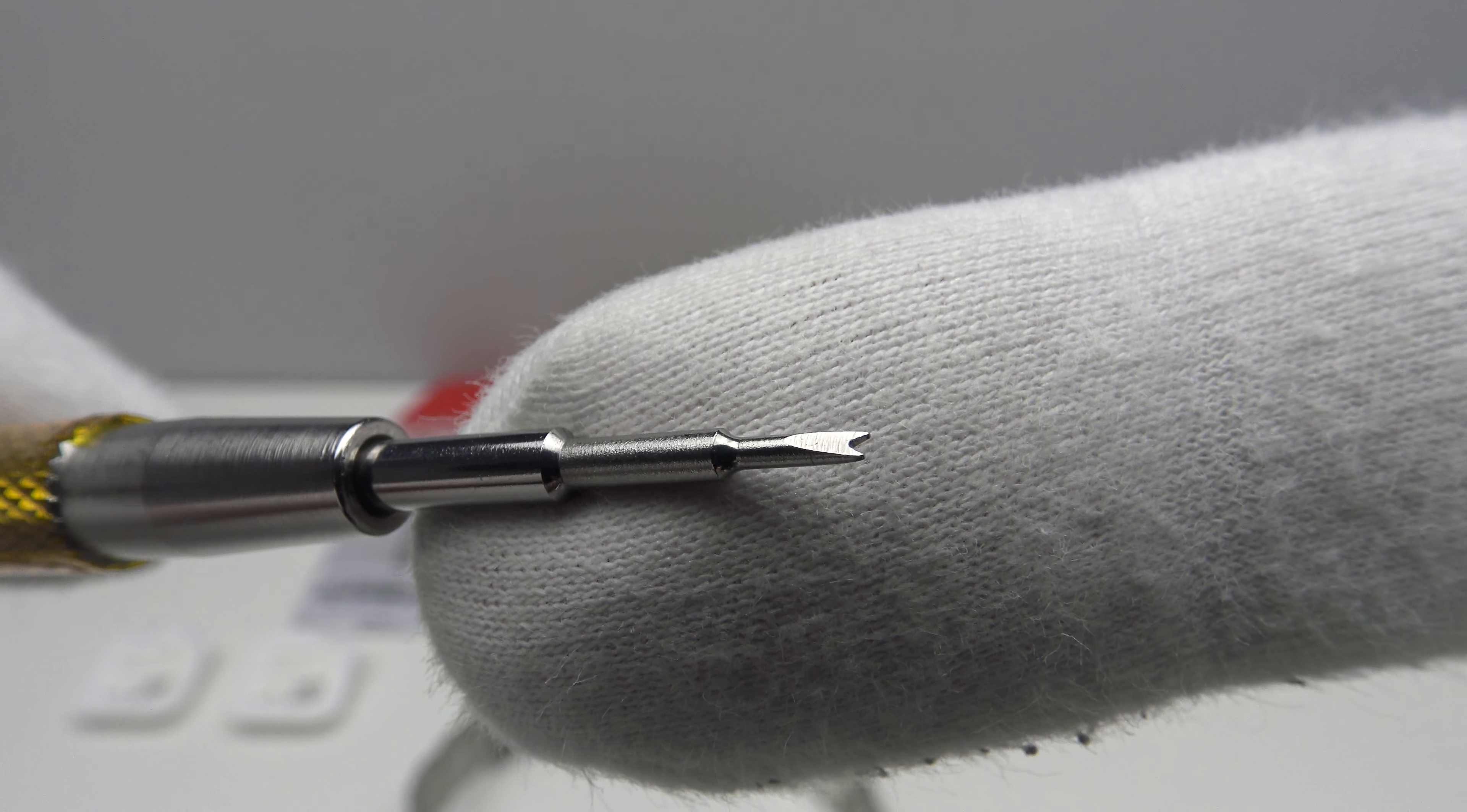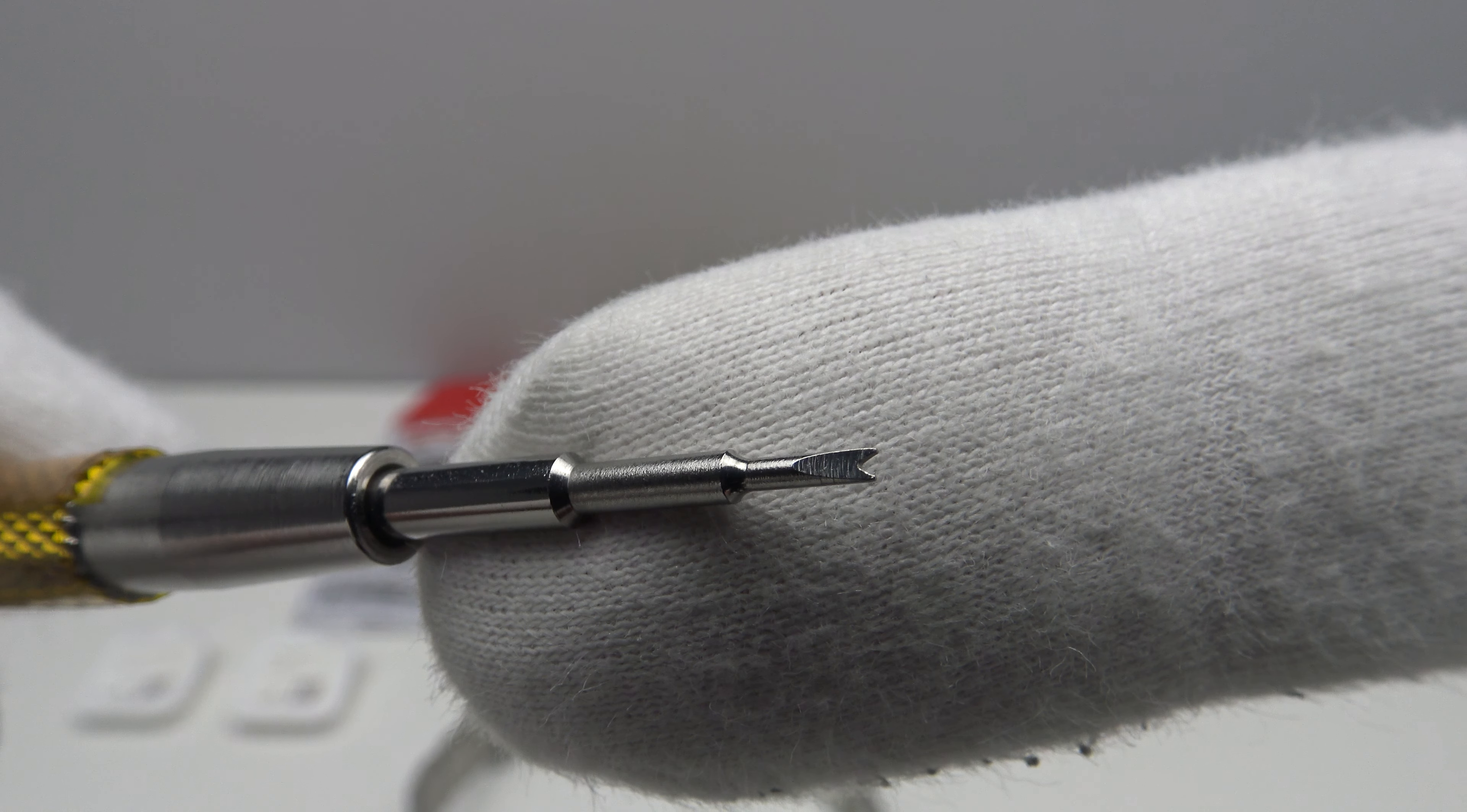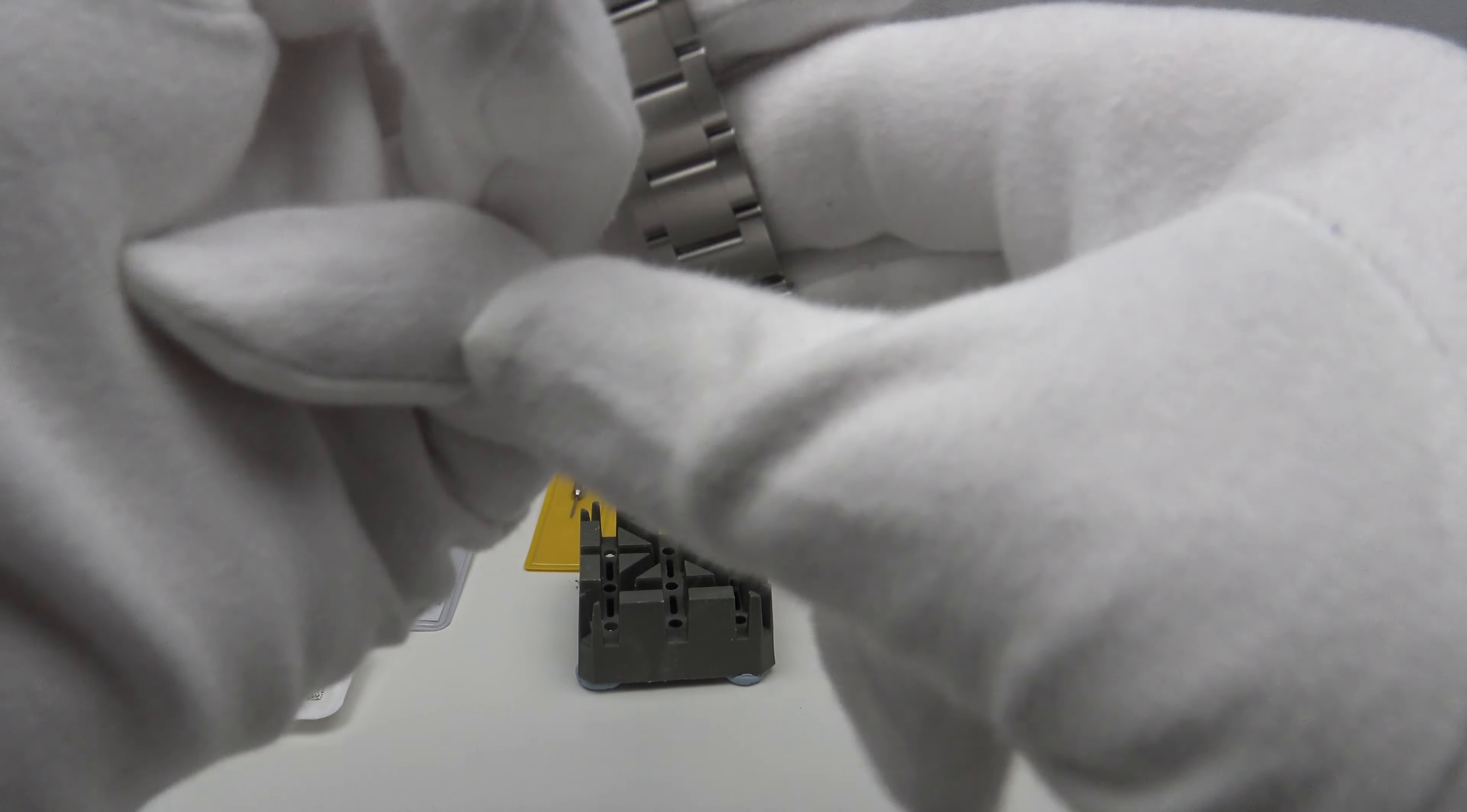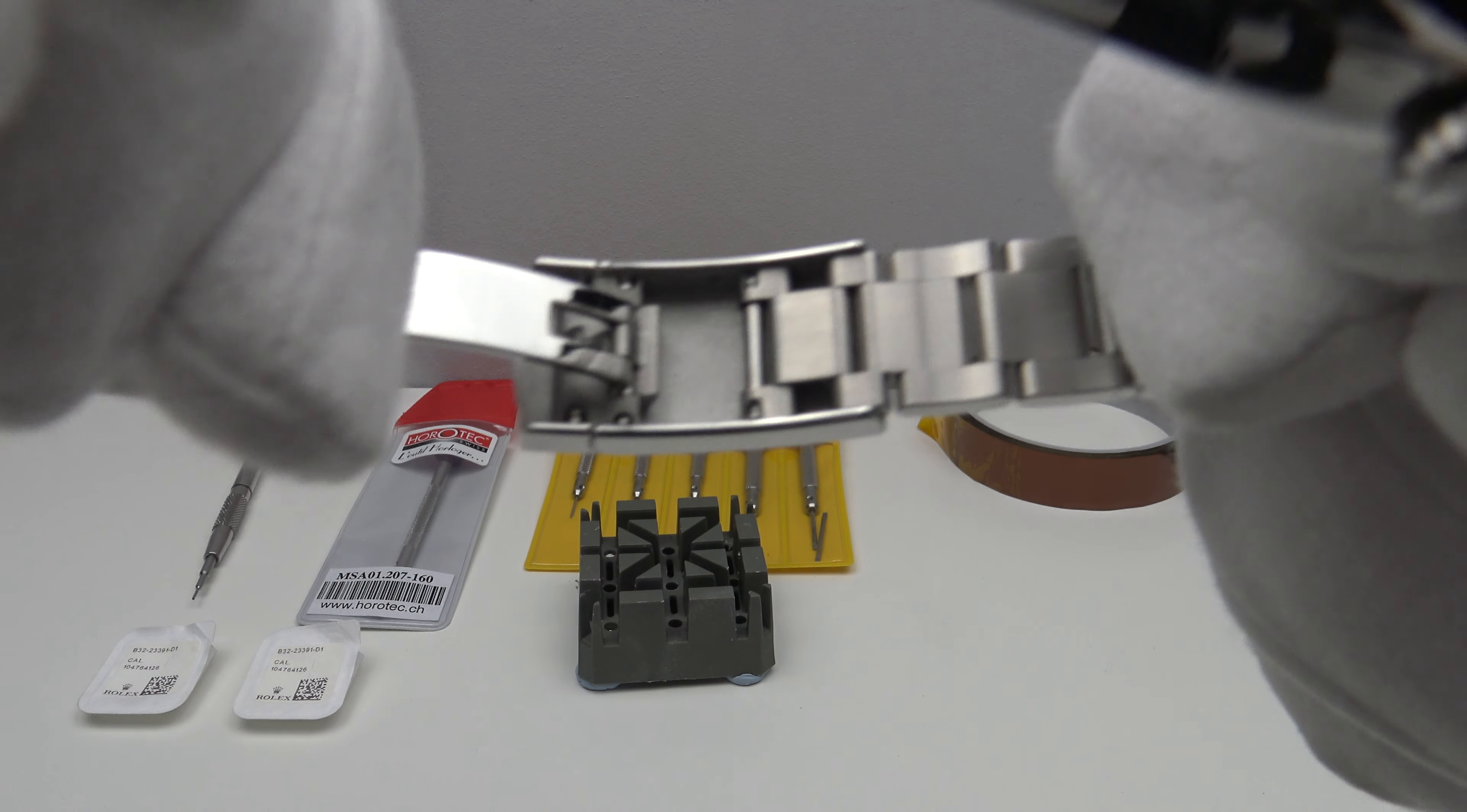This is the advantage of using a Bergeon 6767F because it has a very fine two pronged fork in the end of this spring bar tool and that will engage in the very fine slots inside the clasp. Just bear with me and I'll show you again. There we are.